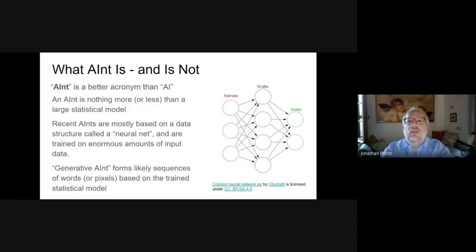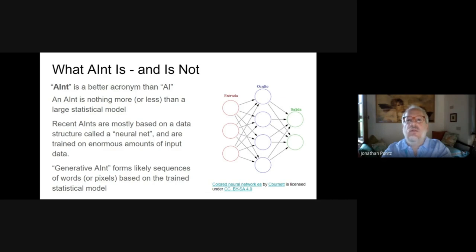To be clear about what we're talking about with generative AI, we use the term AINT — A-I-N-T — which is another acronym for artificial intelligence. It's nice because it emphasizes how AINT fails to be so much of what it is sold as. AINT is a U.S. contraction of 'is not,' and terminology matters.